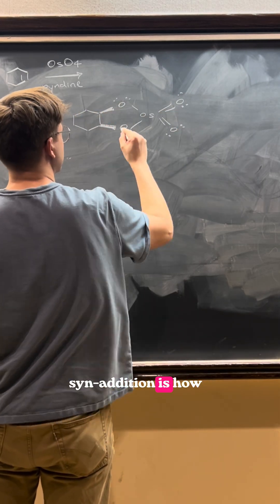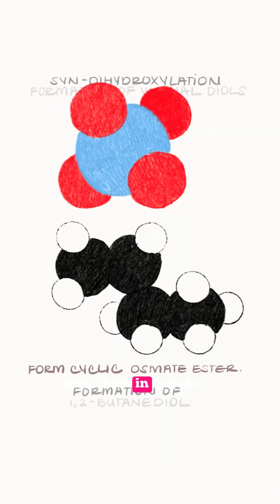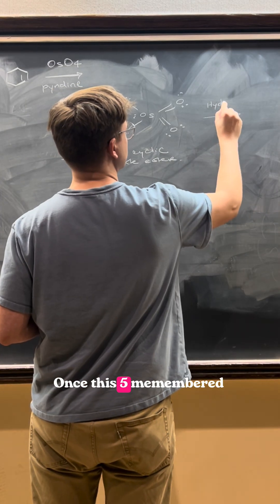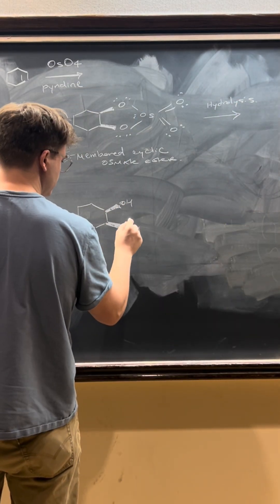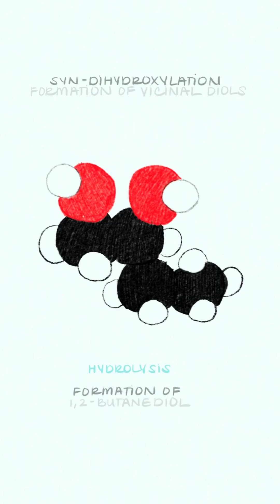The reason why this results in a syn-addition is how the double bond reacts with osmium tetroxide in a cycloaddition fashion all in one step. Once this five-membered cyclic intermediate is formed, the intermediate can then undergo hydrolysis, leaving us with our syn-1,2-diol.